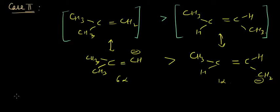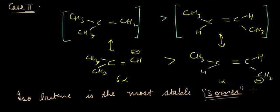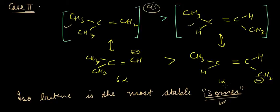We can state that isobutene is the most stable isomer of butene. An isomer is a rearrangement of atoms or groups within the same molecular formula — we will cover isomerism in detail in subsequent lectures. We can see that isobutene, along with the cis and trans forms, are three isomers of butene, and isobutene is most stable because of its stable hyperconjugating structures.